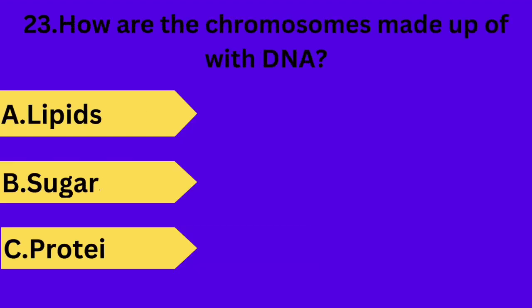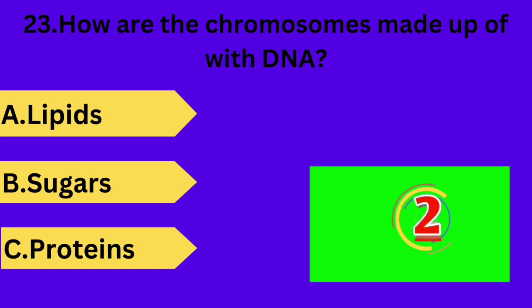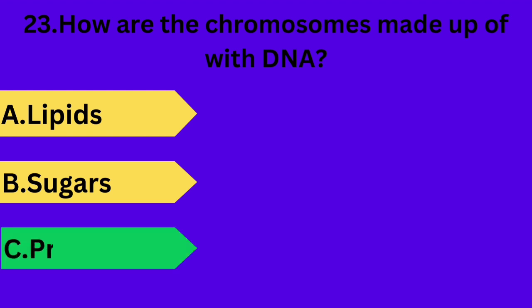And next question is: how are chromosomes made up of with DNA? Option A: lipids. Option B: sugars. Option C: proteins. Your time starts now. Answer is option C: proteins.